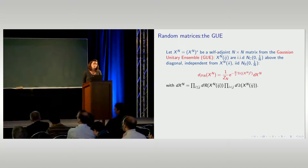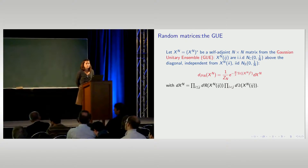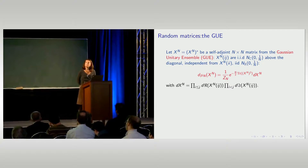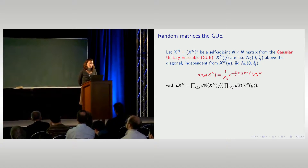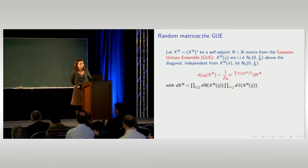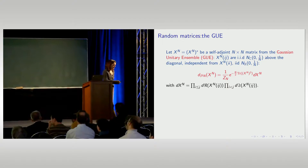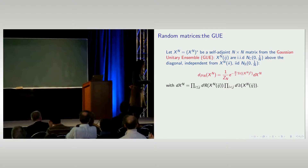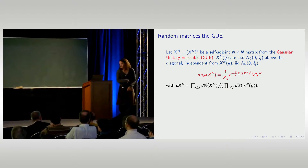The central object is the GUE random matrix. You consider a matrix X_N which is N×N and Hermitian; you fill it above the diagonal with independent complex Gaussian variables, centered with covariance 1/N, and on the diagonal you take real independent Gaussian variables. You can summarize the distribution of X_N as a Gaussian law: you have the Lebesgue measure on Hermitian matrices with a Gaussian weight, renormalized by N to get a probability measure.